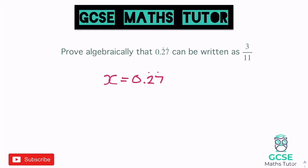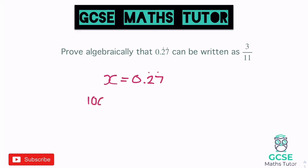If I times this by 10 I'd get 2.72, and the decimals don't line up — so timesing by 10 won't work here. Instead we're going to have to times it by 100, which shifts them along two places. So if we times by 100 we get 27.27, and now these can actually be taken away from each other.